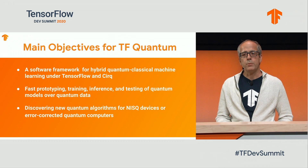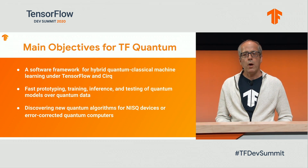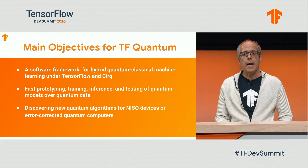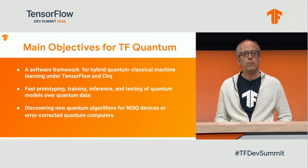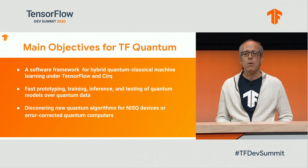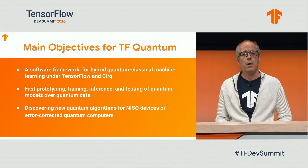What are the main objectives for TF Quantum? First, it's a software framework for hybrid quantum-classical machine learning under TensorFlow and Cirq, allowing researchers to perform fast prototyping, training, inference, and testing of quantum models for quantum data, which can reduce prototyping time from weeks to hours. It can also help machine learning and quantum computing researchers discover new algorithms for near-term devices or ultimately for fault-tolerant quantum computers.